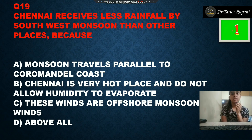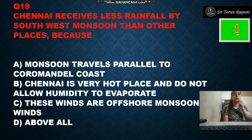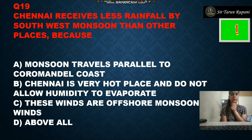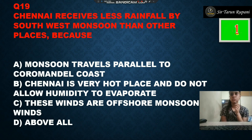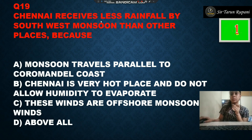Question 19: Chennai receives less rainfall from the southwest monsoon than other places because — option A is the monsoon travels parallel to the Coromandel coast, option B is Chennai is a very hot place and does not allow humidity to evaporate, option C is these winds are offshore winds, and option D is all of the above. The correct answer is all of the above.